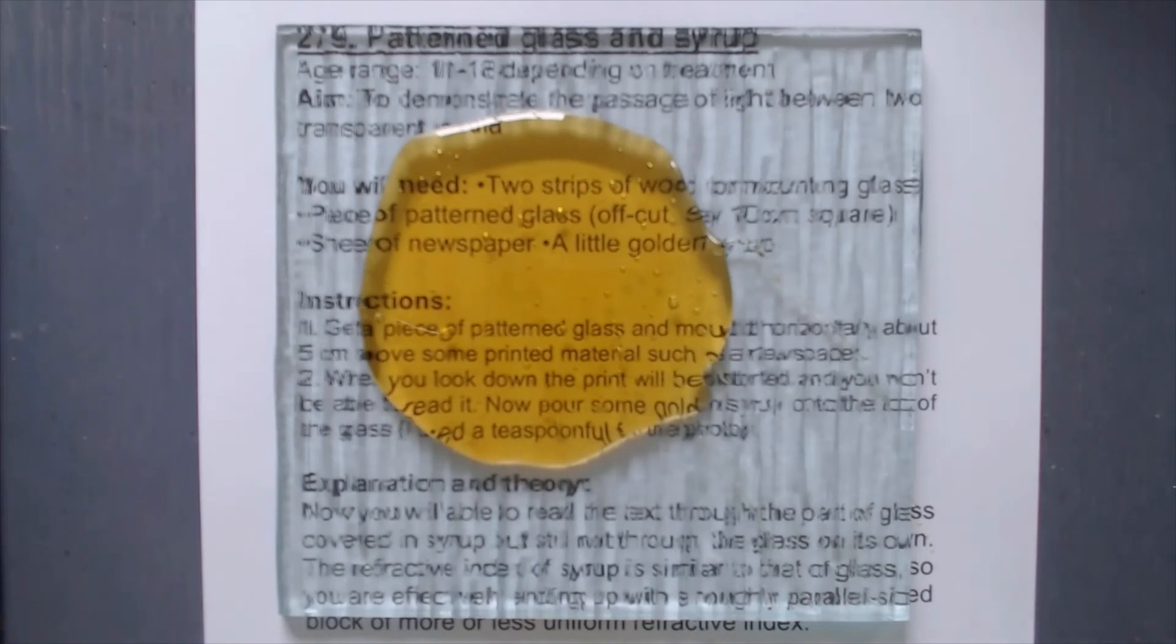And the speed of light in glass and syrup is the same or very close to being the same. And so there's no change of direction of the light at the syrup-glass boundary, and therefore no distortion of the text.